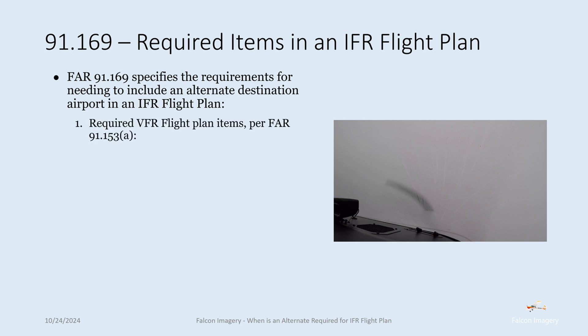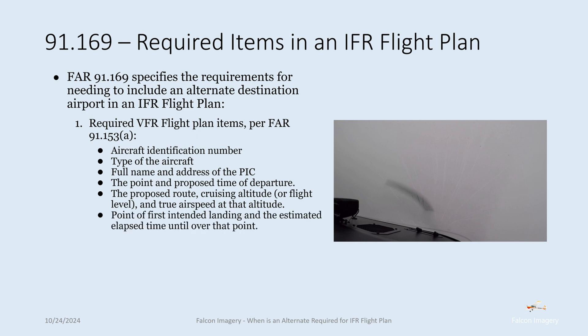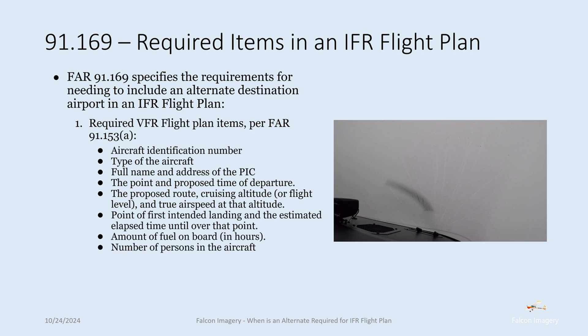it calls out needing all of the items associated with the VFR flight plan, which is defined by 91.153A. Those items include the aircraft identification number or tail number, the type of aircraft, the full name and address of the pilot in command, the point and proposed time of departure, the proposed route, cruising altitude or flight level, and true airspeed at that altitude, the point of first intended landing and the estimated elapsed time until over that point, the amount of fuel on board, the number of persons in the aircraft, and any other information the pilot in command or ATC believes is necessary for ATC purposes.